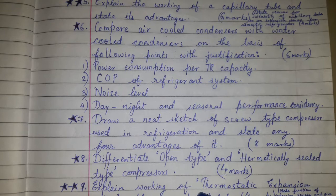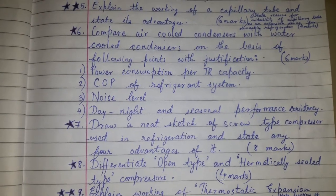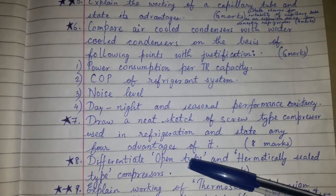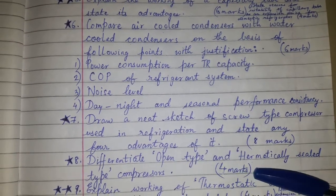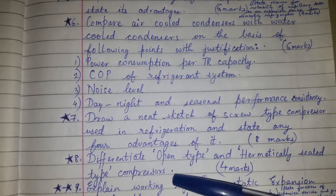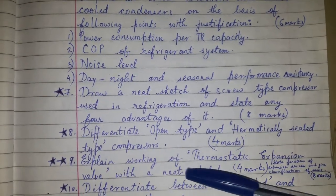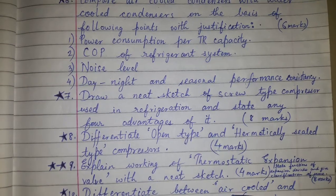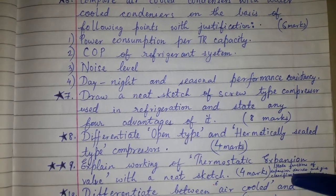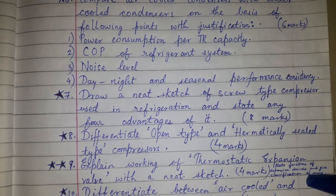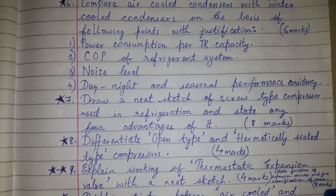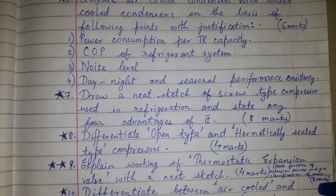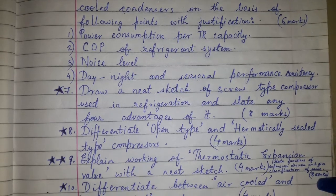For four marks, approximately one to one and a half pages should be written; for eight marks, a minimum of two to two and a half pages should be written, and the required diagram should be drawn to get full marks. Next question: differentiate open type and hermetically sealed type compressors for four marks. Explain working of thermostatic expansion valve with a neat sketch for four marks, or it may be asked as state function of expansion devices and give classification of the same for eight marks.